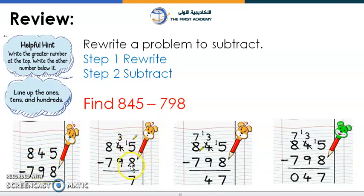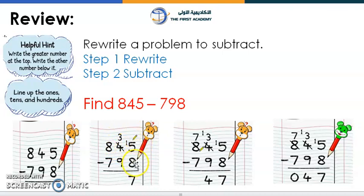Starting from the ones place — remember: more on the floor, we need to go to the next door and ask for 10 more. We need to make the 5 greater than 8 by regrouping, so it becomes 15. So 15 minus 8 equals 7.